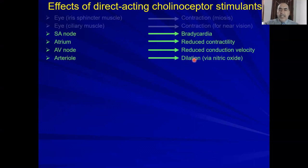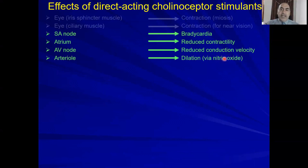On the arteries, muscarinic stimulation causes vasodilatation via nitric oxide. Nitric oxide activates guanylyl cyclase, which converts GTP into cyclic GMP — just replace A with G compared to the GS-PCR pathway. Cyclic GMP activates protein kinase G. So comparing with adenylyl cyclase: ATP becomes GTP, cyclic AMP becomes cyclic GMP, and protein kinase A becomes protein kinase G.